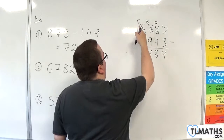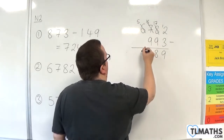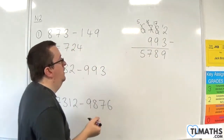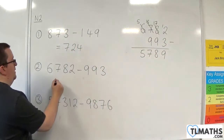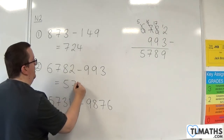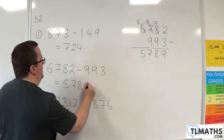And then I've got 5 take away nothing, so 5. So we have 5,789.